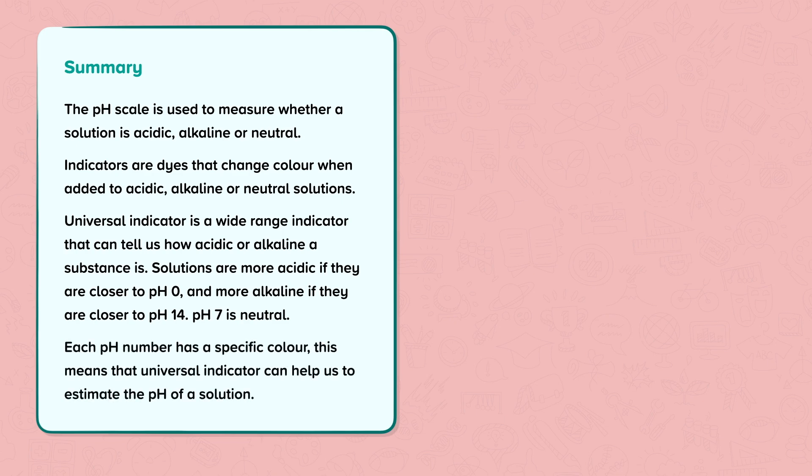Each pH number has a specific color. This means that universal indicator can help us to estimate the pH of a solution.